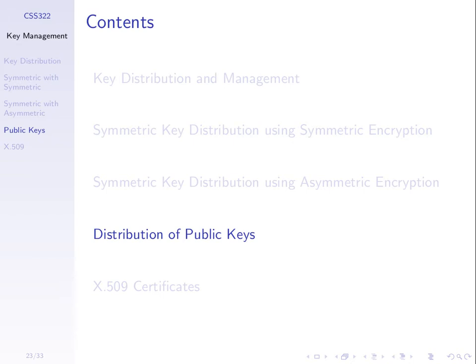We know we can use public keys to encrypt a shared secret. With public key encryption, I can take your public key — because it's public, it's easy to get — choose a secret, say a random value, a secret key. I encrypt that secret using your public key, send the ciphertext to you, and only you can decrypt it because only you have your private key. That's a way to distribute a shared secret.